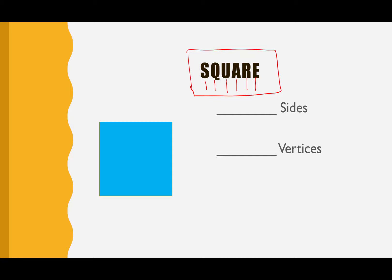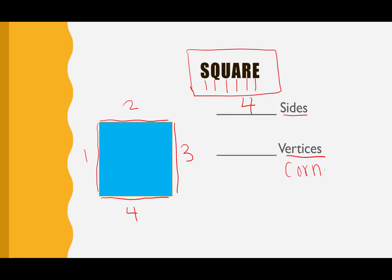We're going to count the number of sides and the number of vertices that a square has. Let's go ahead and look at our blue square and draw a line for each side: one, two, three, and four. So we can write the number four next to sides — it has four sides. Let's count how many vertices. Remember, vertices are also called corners. One, two, three, four. So a square has four sides and four vertices.